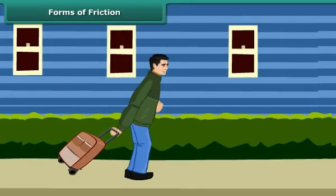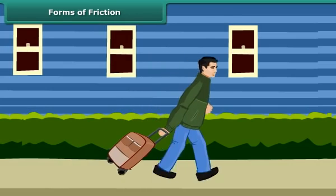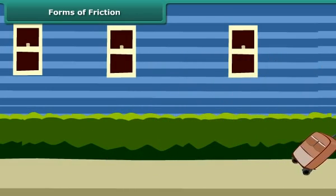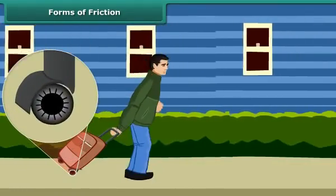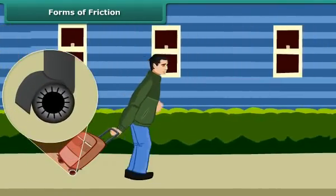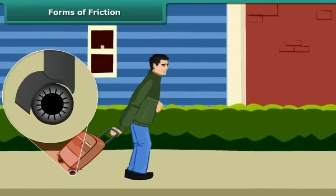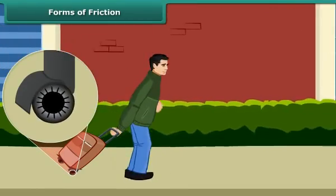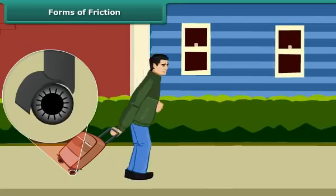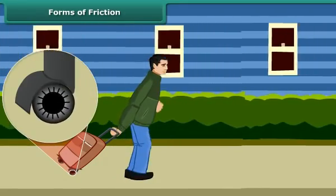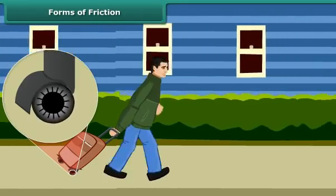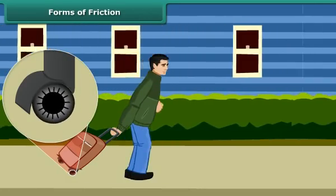You must have seen suitcases and other pieces of luggage fitted with rollers. Even a child can pull such pieces of luggage. The rollers reduce friction and allow objects to roll. It is always easier to roll than to slide a body over another, and that is the reason it is convenient to pull luggage fitted with rollers.